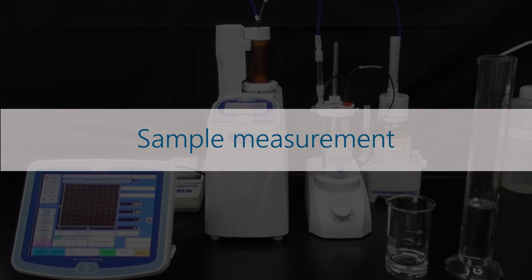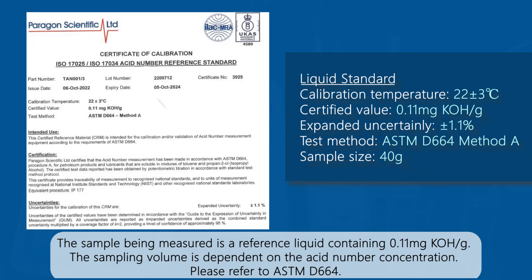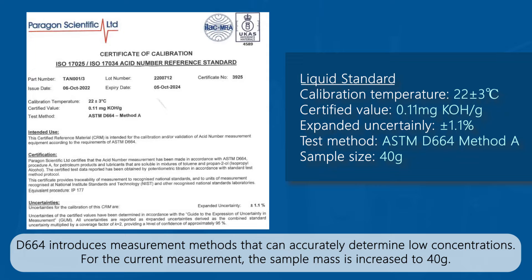Sample measurement: The sample being measured is a reference liquid containing 0.11 mg potassium hydroxide per gram. The sampling volume is dependent on the acid number concentration. Please refer to ASTM D664. D664 introduces measurement methods that can accurately determine low concentrations. For the current measurement, the sample mass is increased to 40 grams.